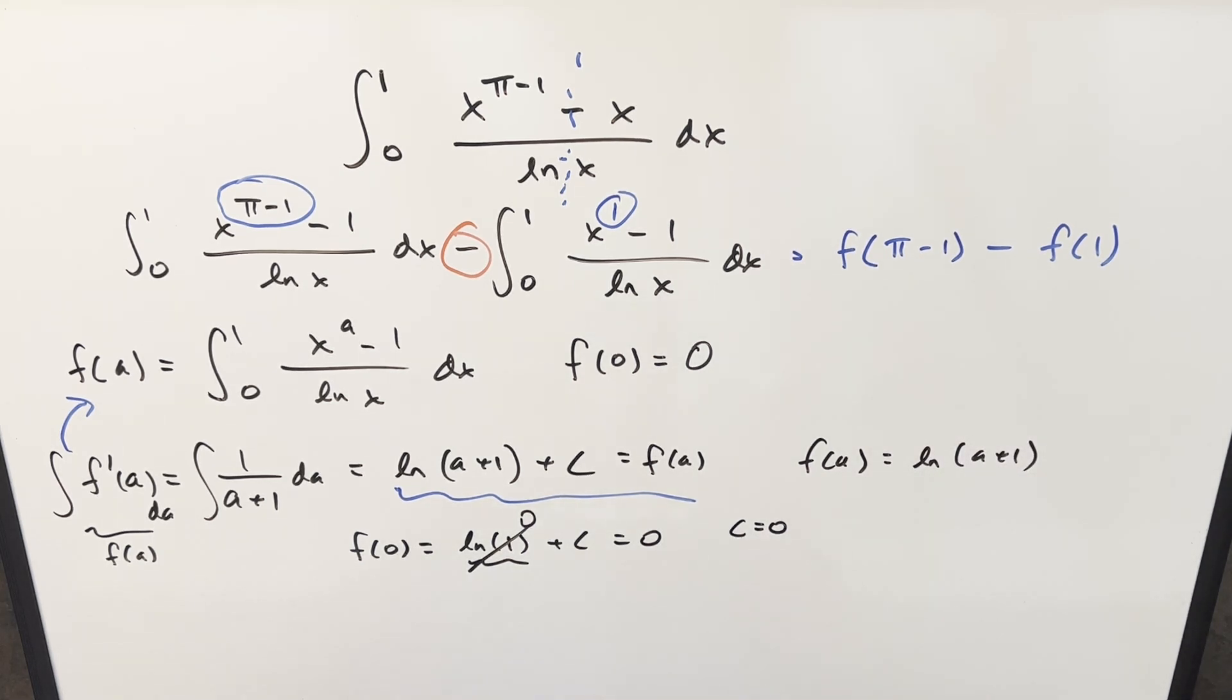And now at this point, all I need to do to finish it off is we just need to calculate this and this, because that's going to be our solution. So we just need to really plug in. So first plugging in pi minus 1 here, you just get natural log of, the minus 1 and the plus 1 cancel. We just have natural log of pi. And then you plug a 1 in here. Now you just have natural log of 2. Putting these together with log properties for my final solution to this, you just get natural log pi over 2.